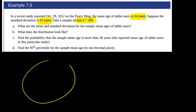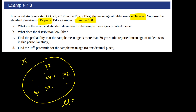I'm going to let X be the age of tablet users. All these little dots are the different ages of tablet users — this person is 22, this person is 28, this person is 40, this person is 50, 32, etc. We know the average age of these tablet users is 34 years, and the standard deviation is 15 years. So the mean of X and the standard deviation of X — we know those.